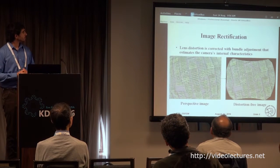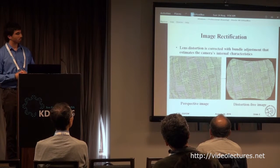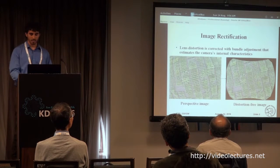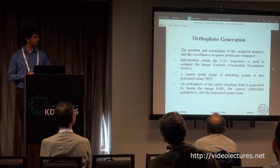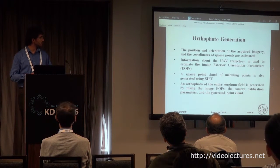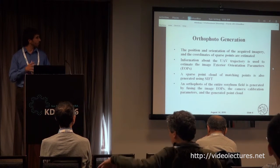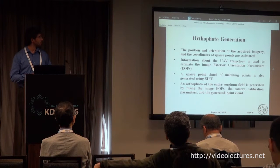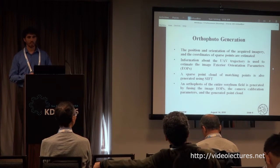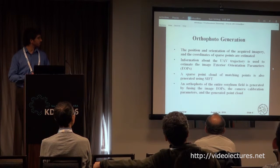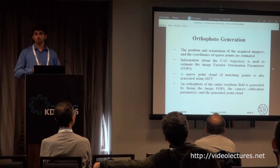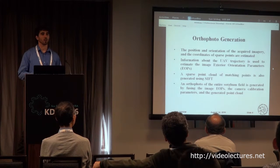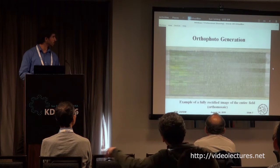First, they rectify the lens distortion by estimating the camera's internal characteristics. The second step is to fuse all these images into one big orthophoto of the entire sorghum field. To do this, the position and orientation of the thousands of acquired images and the coordinates of spur points are estimated. Then, thanks to the prior information of the UAV trajectory, which is known, the exterior orientation parameters are estimated. In the paper, you can see a nice example of a point cloud used for matching the images using SIFT. This is an example of the generated orthophoto.